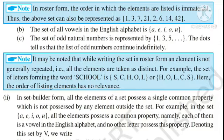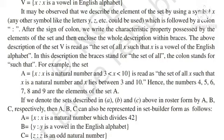Now we discuss the set builder form। All the elements of a set possess a single common property which is not possessed by any element outside the set। For example, in the set {A, E, I, O, U} all elements possess a common property — each of them is a vowel in the English alphabet। We write this set as V = {x : x is a vowel in English alphabet}।